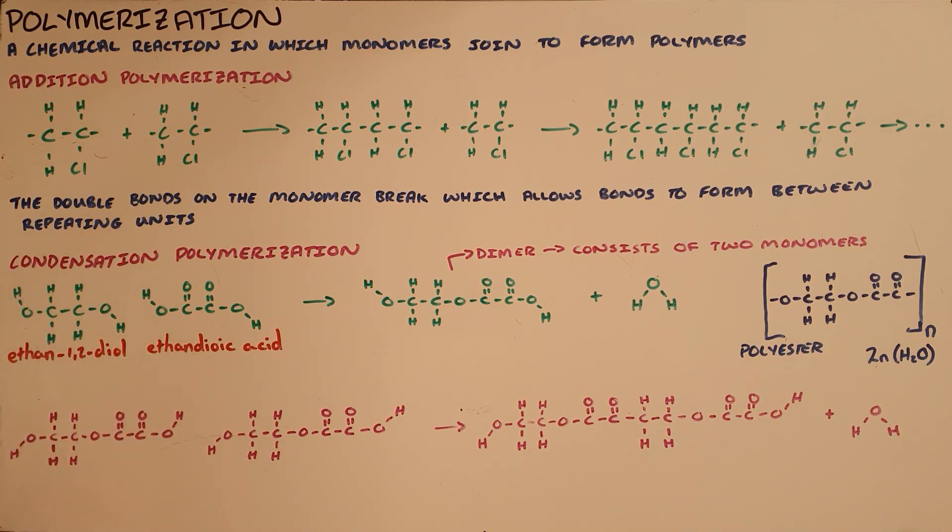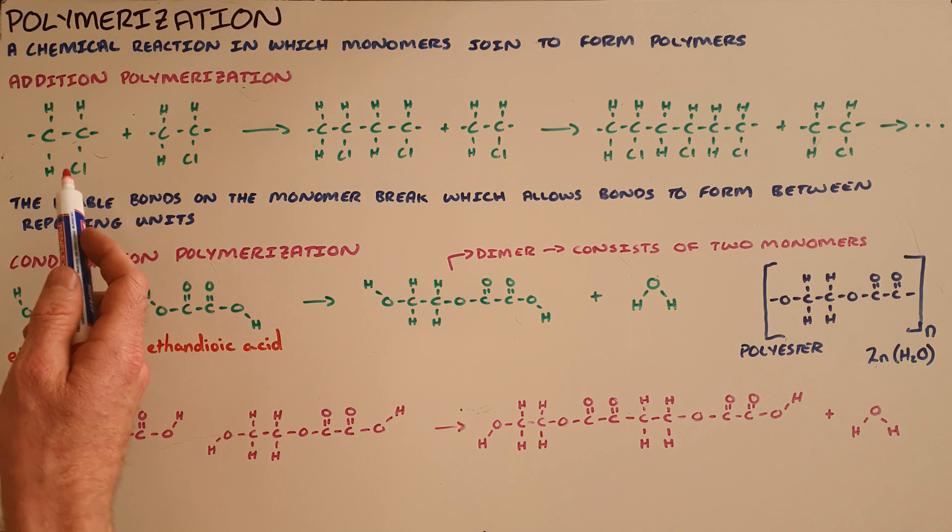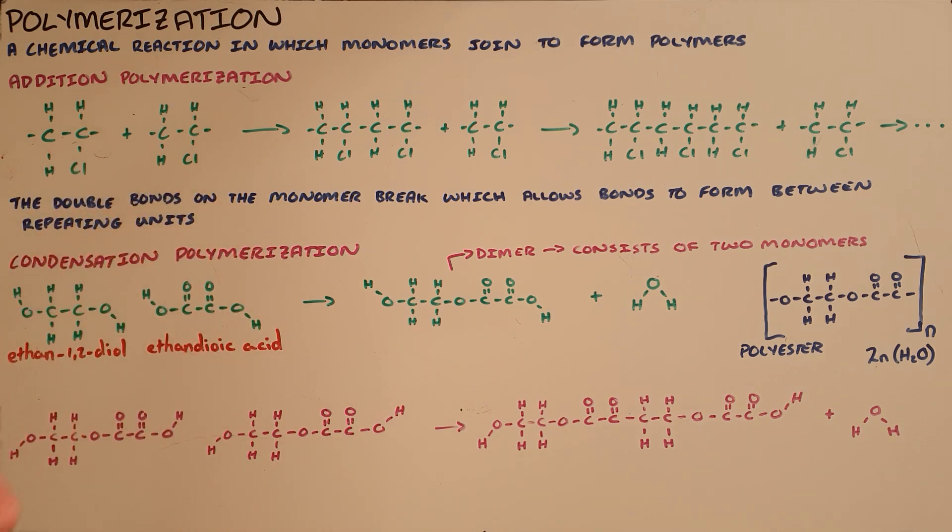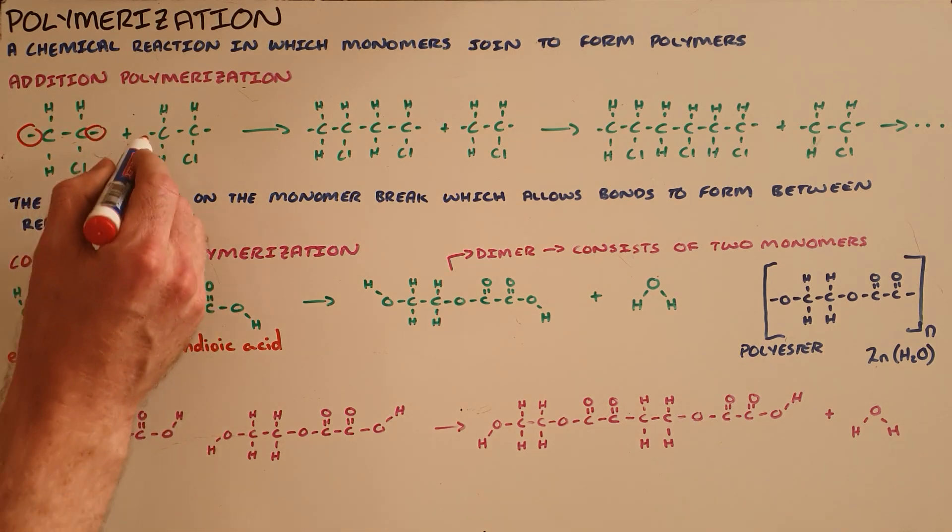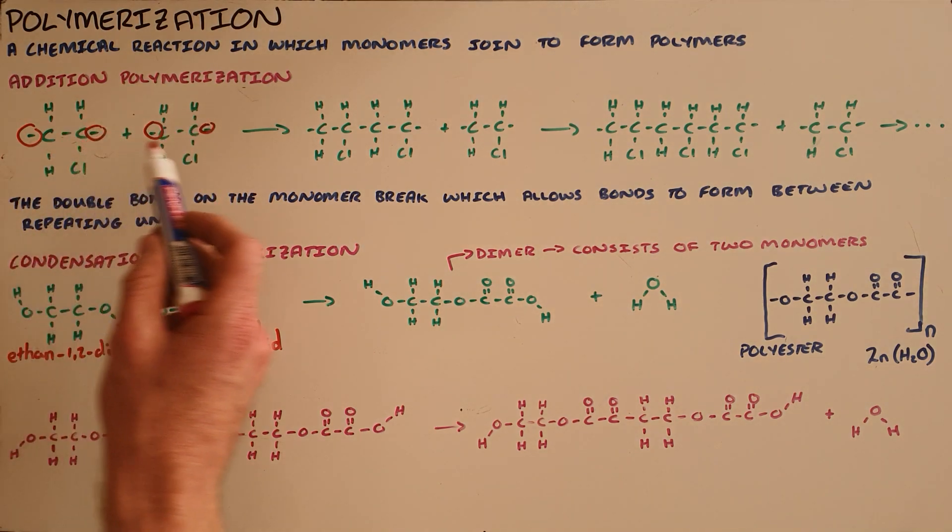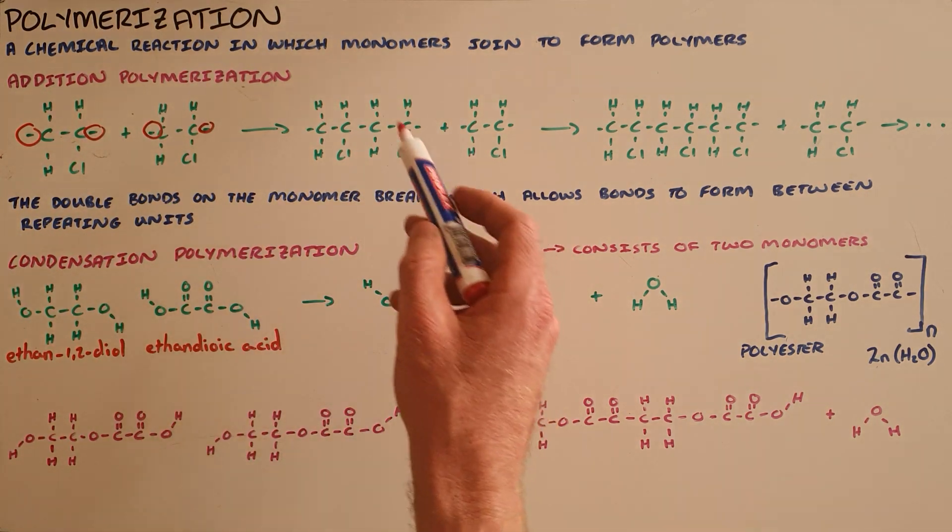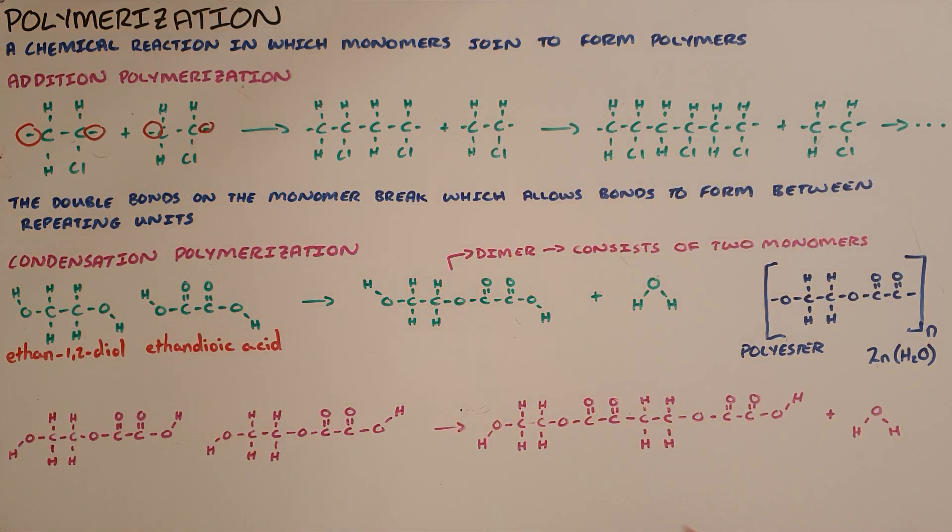As an example, we have the repeating unit obtained from the monomer vinyl chloride, or chloroethene. When that double bond breaks, it forms a radical on either side of the carbon, which allows those carbons to look for bonds and attach to each other in an ever-growing chain that forms a polymer.